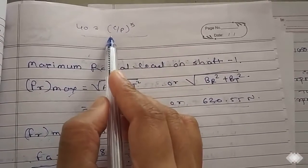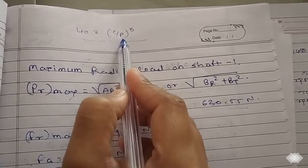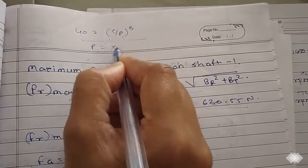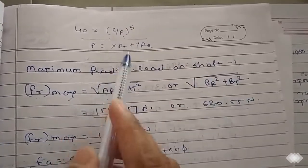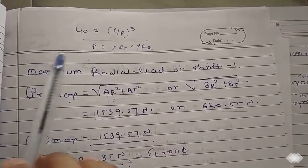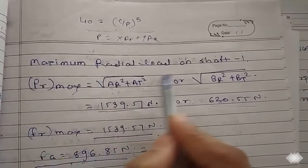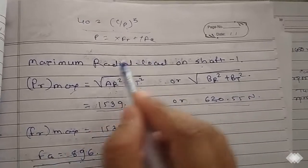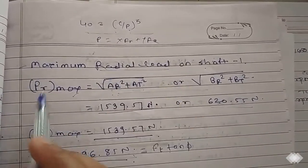Now we need to use this formula to calculate the dynamic load carrying capacity of the bearing. For that we need to know the equivalent load. Equivalent load P is equal to X·FR plus Y·FA. For that we need to calculate X and Y, and before that FA and FR.